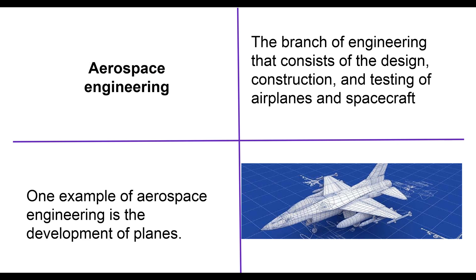The next word is aerospace engineering — the branch of engineering that consists of the design, construction, and testing of airplanes and spacecraft. The word 'aero' kind of sounds like air and space, so you think of flight. One example of aerospace engineering is the development of planes — I have a blueprint and 3D model of a jet plane here as an example of something an aerospace engineer could be working on. Really anything that's going to fly requires an aerospace engineer.